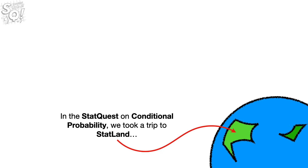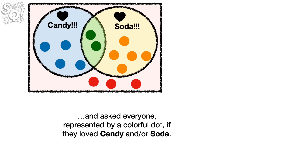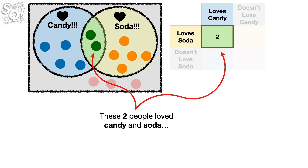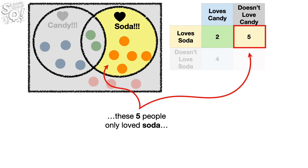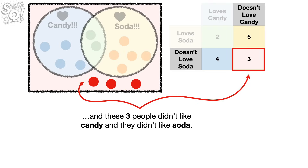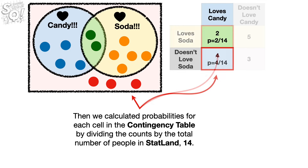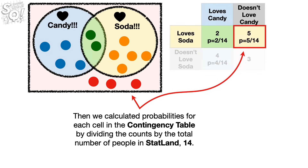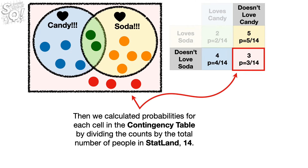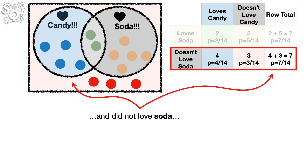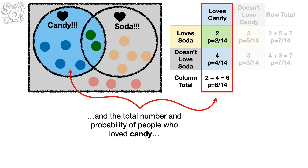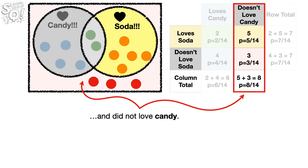In the StatQuest on conditional probability, we took a trip to Statland and asked everyone — represented by a colorful dot — if they loved candy and/or soda. Two people loved candy and soda. Four people only loved candy. Five people only loved soda. And three people didn't like candy and didn't like soda. Then we calculated the probabilities for each cell in the contingency table by dividing the counts by the total number of people in Statland, 14. Then we determined the total number and probability of people who loved soda and did not love soda, and the total number and probability of people who loved candy and did not love candy.